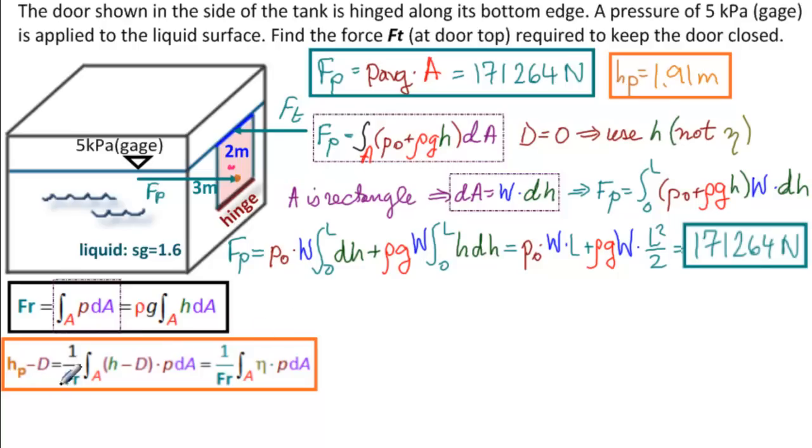Now, moving on to the center of pressure, remember that D is zero and that we can use H directly, not eta. So we have Hp equals one over Fp, and then we have the integral over A becomes the integral from zero to L. dA is W dH, so zero to L. Then we have H minus D. D is zero, so H. P is P0 plus rho G H, and then W dH.